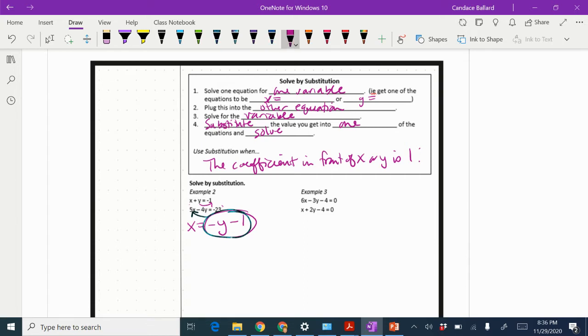So I'm starting with 5 times x minus 4y equals negative 23. I am then going to substitute in the negative y minus 1.